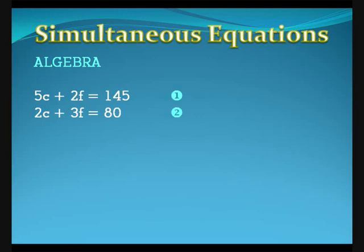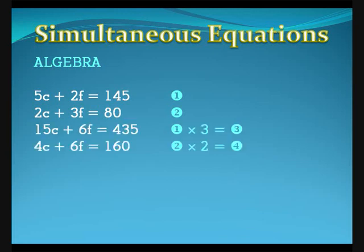Multiply equation 1 by 3, and equation 2 by 2. Call these equations 3 and 4. Subtract equation 4 from equation 3. So 11c equals 275, and c equals 25.